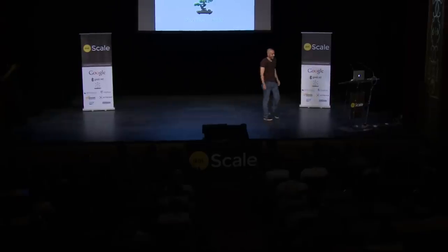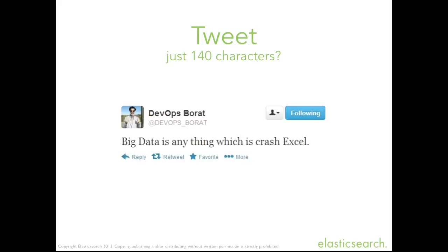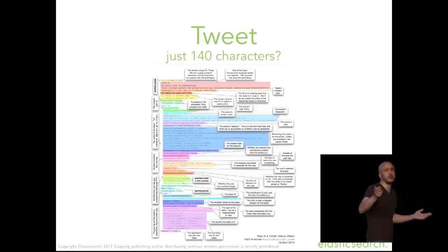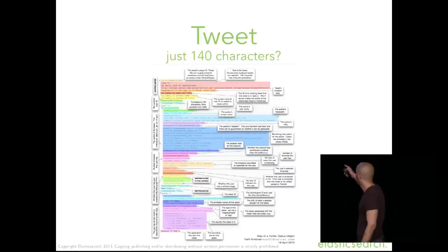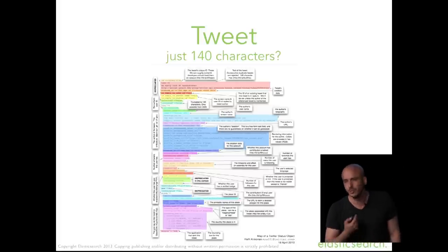What did I just do? I effectively just tweeted information — 140 characters. Is that big data? I hate the term 'big' in big data. What is big? Obviously something that crashes Excel. But did it end with tweeting 140 characters? Probably not. If you hook into the Twitter firehose, a single tweet is composed of all of that information — tons of metadata: location, username, followers, hashtags.